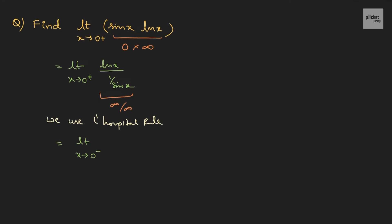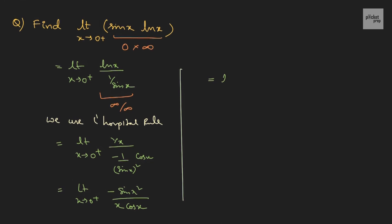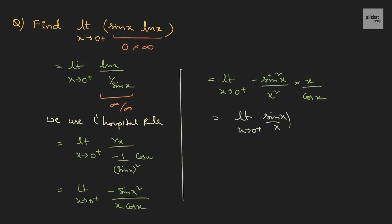This is limit x tends to 0 plus: the derivative of log x is 1/x, and the derivative of 1/sin x is −cos x / sin²x. So this simplifies to limit x tends to 0 plus of −sin²x / (x·cos x). We can reframe this as limit x tends to 0 plus of −(sin x / x)² times (x / cos x). Since we know limit x tends to 0 of sin x / x is 1, this becomes negative 1 squared times 0/1, which equals 0. Anything multiplied by 0 is 0, so therefore this is the answer.